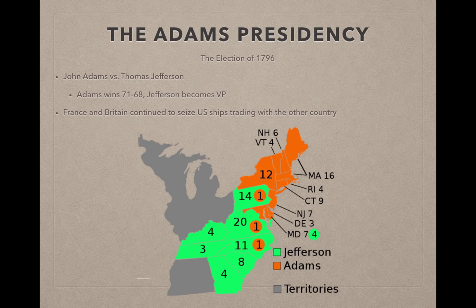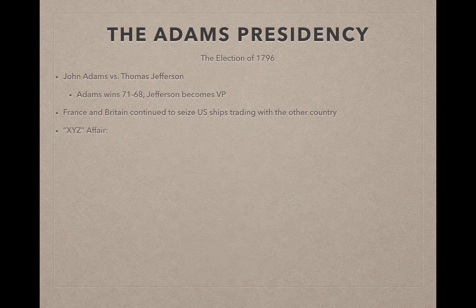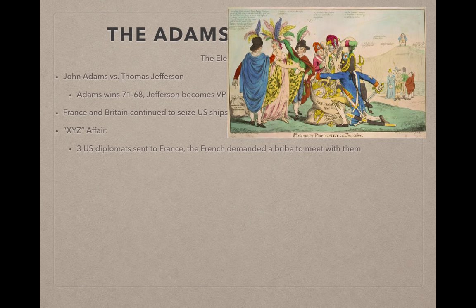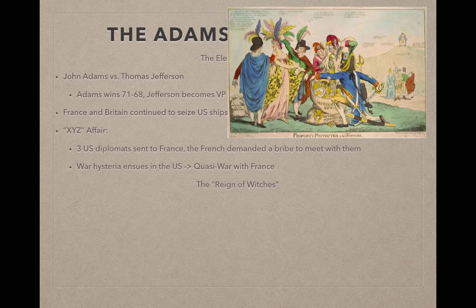France and Britain continued seizing U.S. trading ships — if the U.S. traded with France, Britain would seize the ship, and vice versa. This led to the XYZ Affair: three U.S. diplomats were sent to France, where three French agents — named X, Y, and Z — demanded a bribe just to meet with French officials. This led to the Quasi-War with France, during which the two nations attacked each other's ships for a couple of years. Eventually in 1800 a peace treaty was signed after Napoleon took over France.